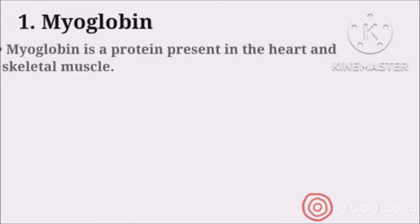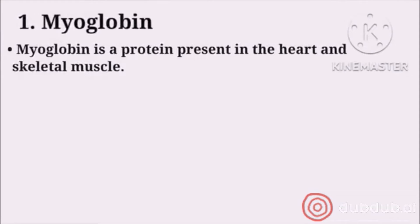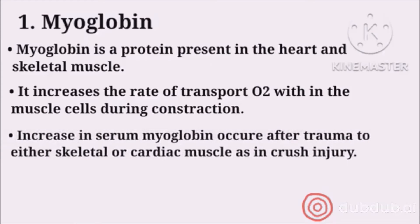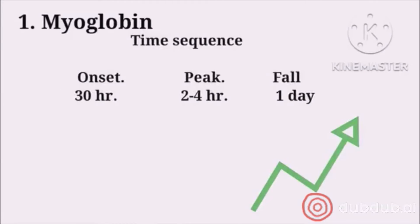The first cardiac marker is myoglobin. Myoglobin is a protein present in heart muscle and skeletal muscle. Its function is to provide oxygen to the muscles at the time of contraction. Whenever there is an injury in the muscles — whether heart muscle or skeletal muscle — myoglobin comes out of the muscle and into the bloodstream. If a patient has a heart attack, myoglobin comes out of the muscle and enters the bloodstream, and the level rises within 30 minutes of injury.